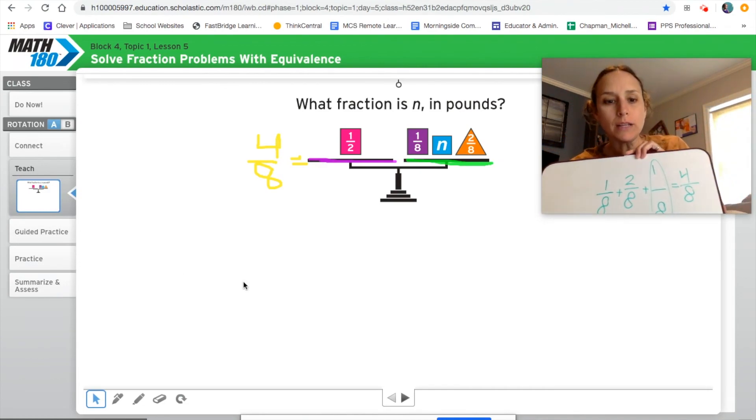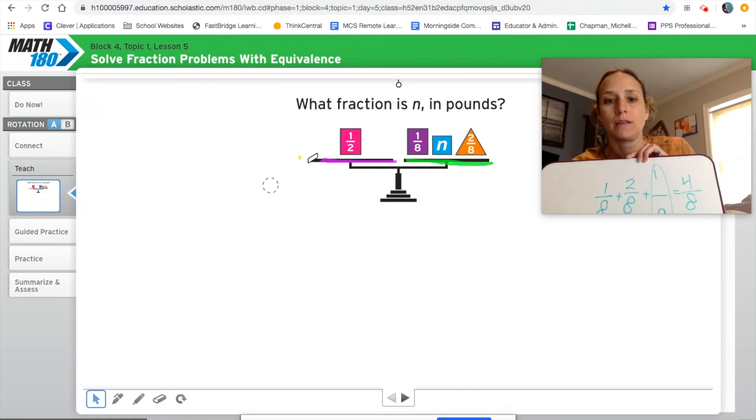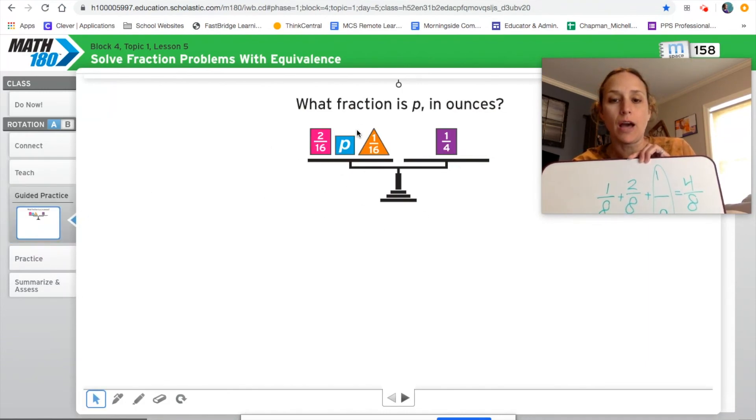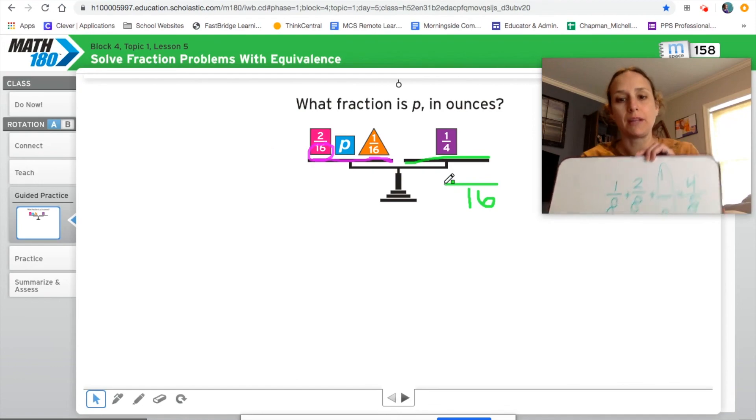So as we move on here, erase my screen. We're going to take a look at another problem together. So we've got our guided practice here. So again, we've got this side of the scale, which I can mark up with a color and say this is my purple side again. There it is with a denominator of 16. I can mark up this side. This has a denominator of four, which I need to find an equivalent of with a denominator of 16.